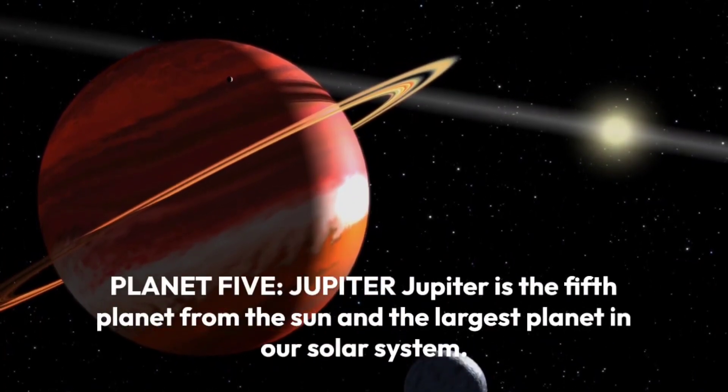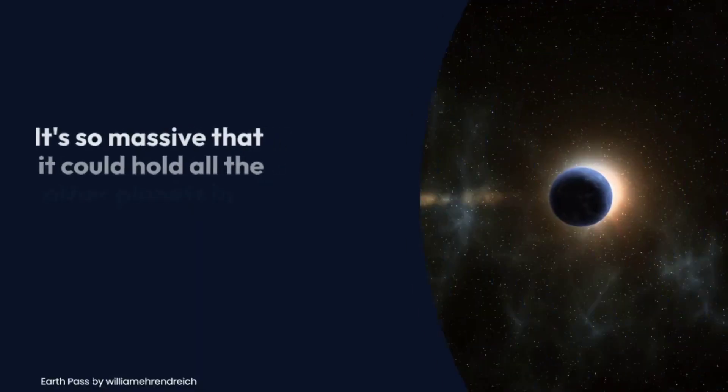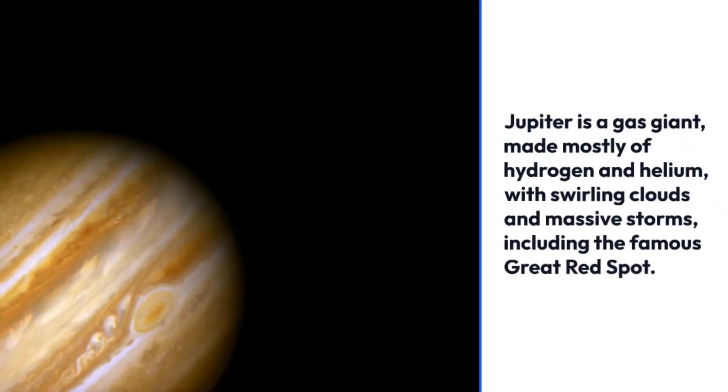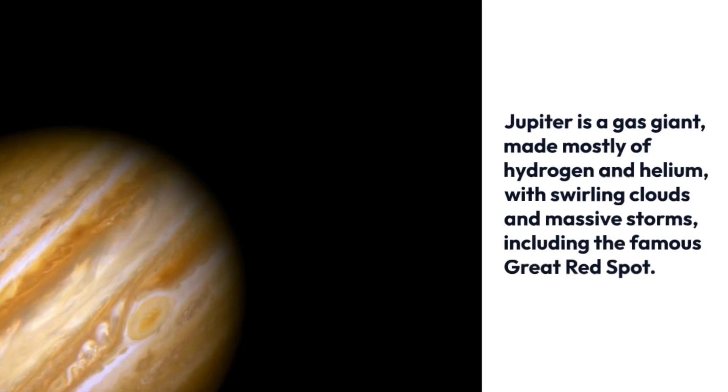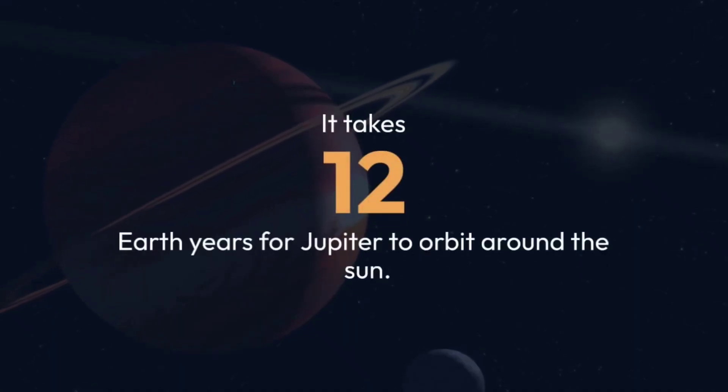Planet 5: Jupiter. Jupiter is the fifth planet from the sun and the largest planet in our solar system. It's so massive that it could hold all the other planets in our solar system inside it. Jupiter is a gas giant, made mostly of hydrogen and helium, with swirling clouds and massive storms, including the famous great red spot. It takes 12 Earth years for Jupiter to orbit around the sun.